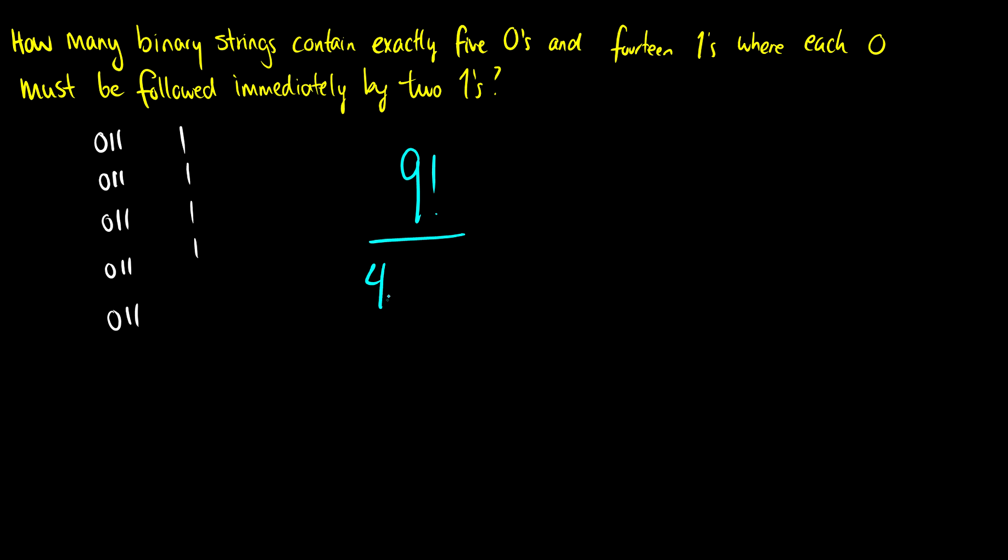Four of them are ones, and five of them are triplets 0, 1, 1. So our end result will be 9 factorial over 4 factorial 5 factorial.